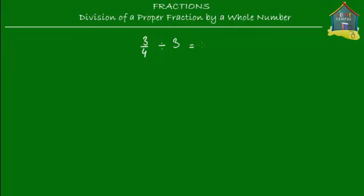And we want to find out what that gives us. So we're going to take three fourths of something and divide it among, say, three people. So let's take, for example, a pizza — actually three fourths of a pizza.